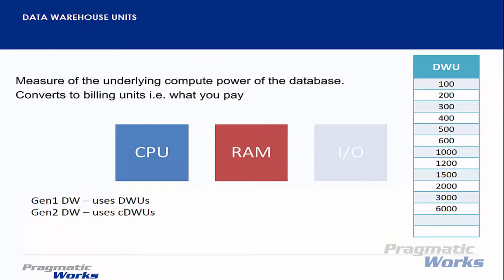As a result, this scales very well as the amount of data increases. In Azure SQL Data Warehouse, we have a concept called the Data Warehousing Unit, or DWU. This is a measure of the underlying compute power of the database. What this means is that on Azure SQL Data Warehouse, you don't have to select specific configurations of CPUs, RAM, or storage. The only thing you have to worry about is the amount of data warehousing units that you provision.